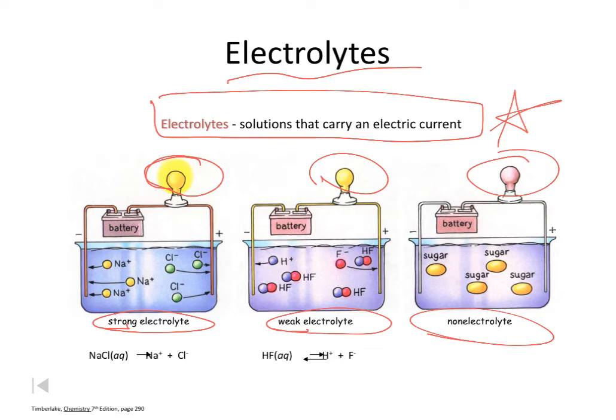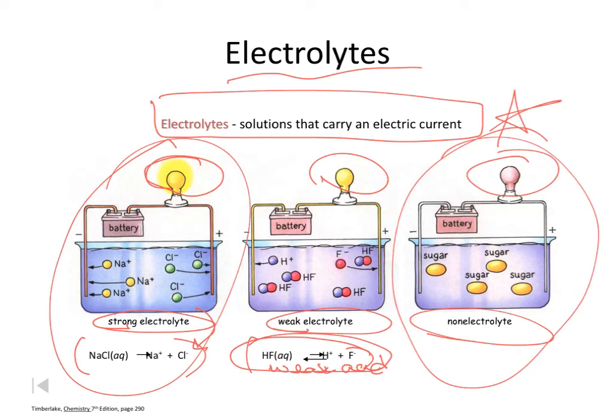I want you to look at the examples they've given under each of these figures. Ionic compounds that dissolve in water make strong electrolytes. This is an acid. It happens to be a weak acid. We'll talk about that more later. But, it conducts electricity, but weakly. And, then, sugar, which is a covalent molecule, is a non-electrolyte. Can you look at those and tell me what you think the key is for a strong electrolyte? What does a sodium chloride solution have that a sugar solution doesn't have?